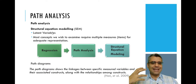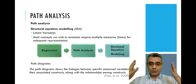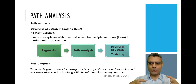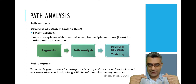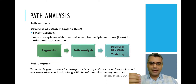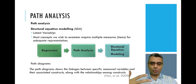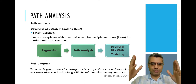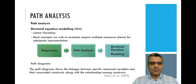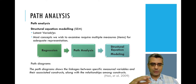To measure latent variables, for example customer satisfaction, you may use a questionnaire with five, six, or seven items — questions that all address customer satisfaction. We measure latent constructs indirectly using instruments we develop, and in most cases it is a questionnaire survey. We prepare a set of questions, ask respondents, and this way we measure the latent constructs.